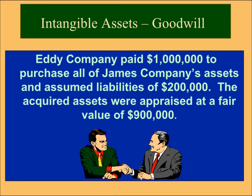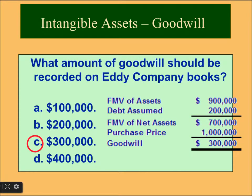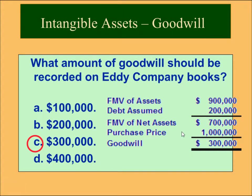Let's see an example. Eddie Company paid $1,000,000 to purchase all of James Company's assets and assumed liabilities of $200,000. The acquired assets were appraised at a fair value of $900,000. Deducting the liability from the fair market value gives a net fair market value of $700,000.